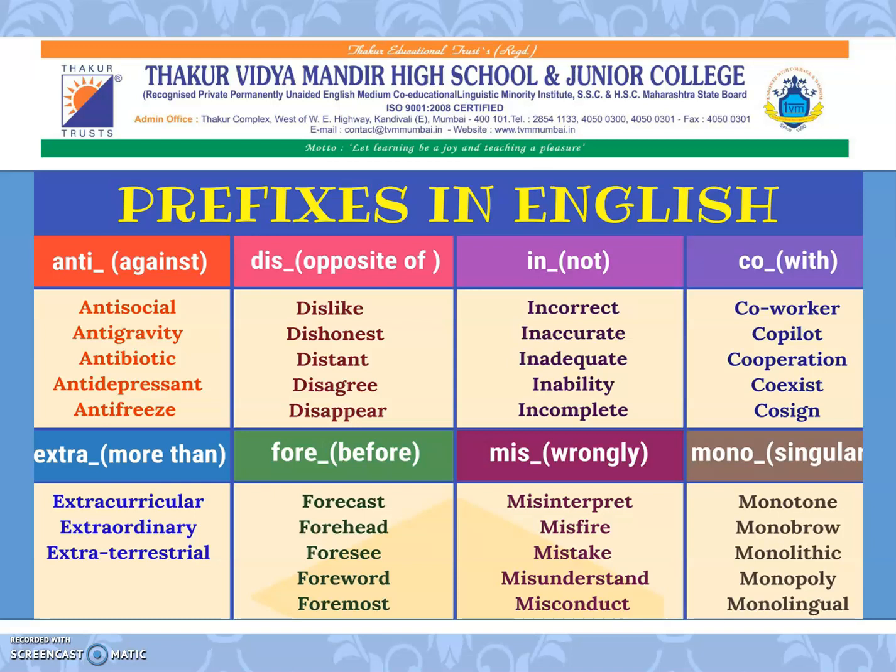EXTRA means more than: extracurricular, extraordinary, extraterrestrial. FORE means before: forecast, forehead, foresee, forward, foremost. MIS means wrongly: misinterpret, misfire, mistake, misunderstand, misconduct.